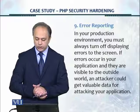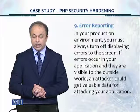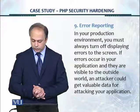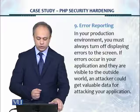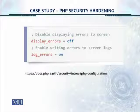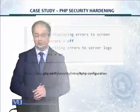On error reporting: in your production environment, you must always turn off displaying errors to the screen. If errors are visible to the outside world, an attacker could get valuable data for attacking your application. The setting is 'display_errors = Off'. You also need to enable writing errors to server logs by setting 'log_errors = On'.